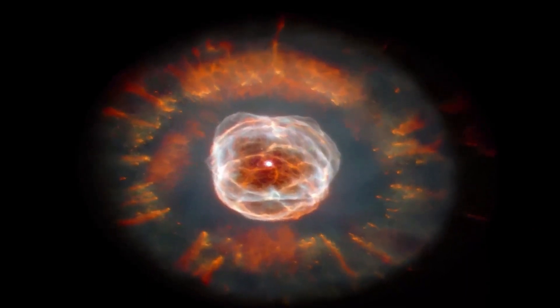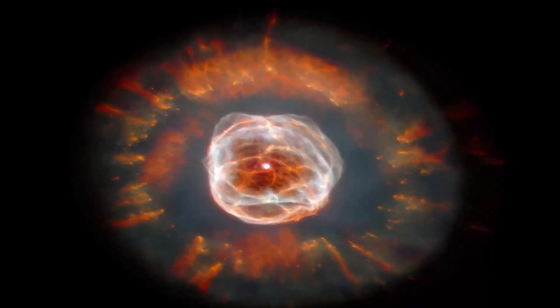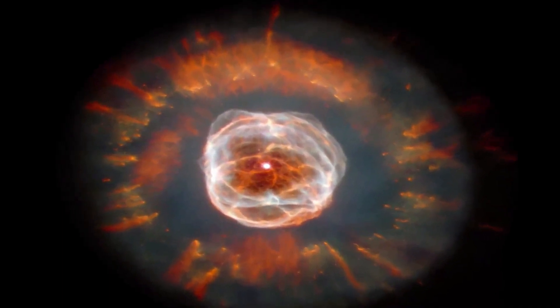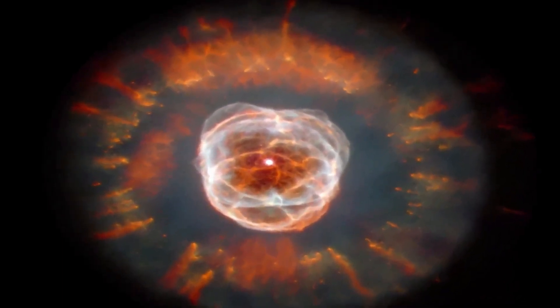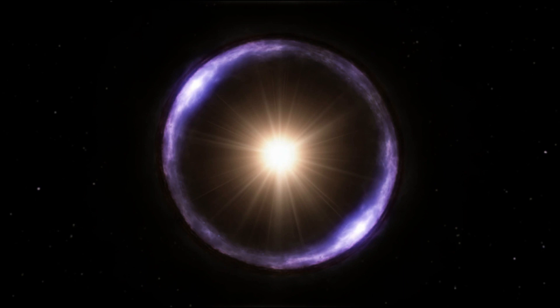Three different filters are used in the photograph. The F1000W filter in red collects light wavelengths at 10 microns. The F770W filter for 7.7 micron wavelengths is green. The blue filter is the F560W, which detects wavelengths of 5.6 microns.